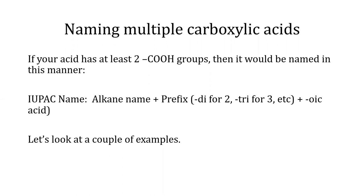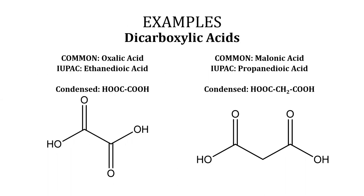Let's look at a couple of examples. The left structure has a condensed structural formula of HOOC-COOH and is commonly named oxalic acid, with an IUPAC name of ethanedioic acid. The right structure has a condensed structural formula of HOOC-CH2-COOH, which is commonly named malonic acid and has an IUPAC name of propanedioic acid.